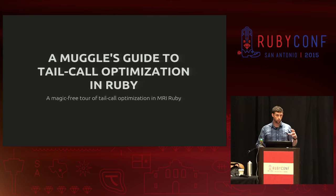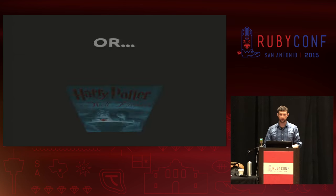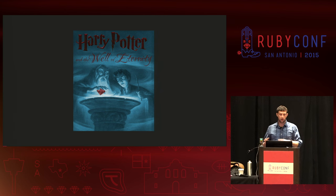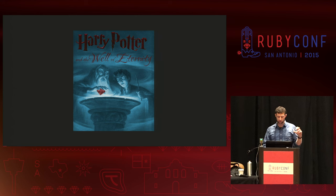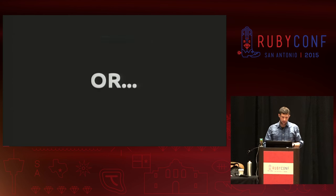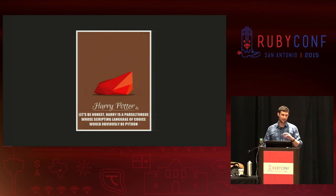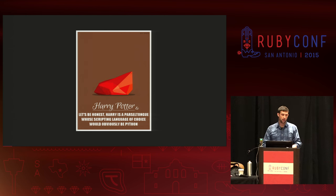I'll get into what I mean by that in a moment, but first let's consider some alternate titles. One was 'Harry Potter and the Well of Eternity' because system stack errors can be a nightmare, especially those backtraces that go on for days. Worth noting: Harry is a Parseltongue, and his scripting language of choice is probably going to be Python, not Ruby.